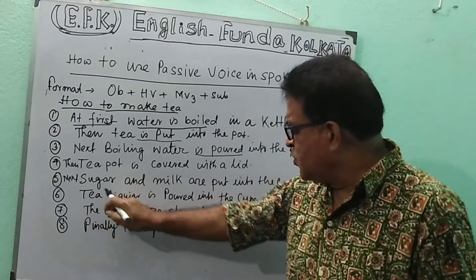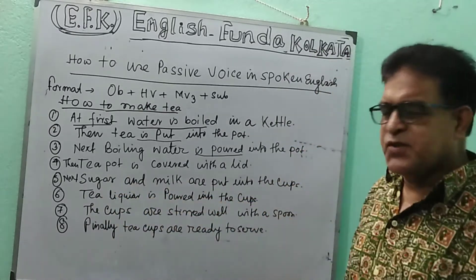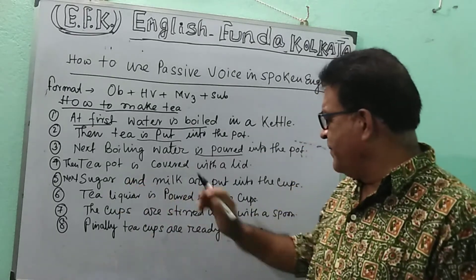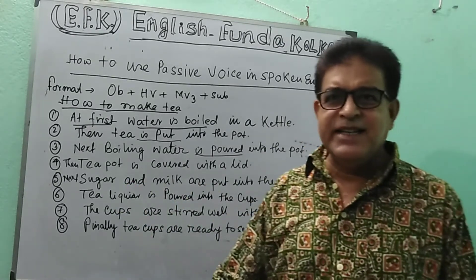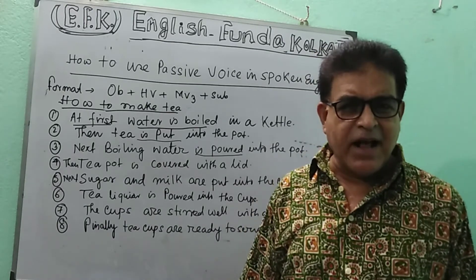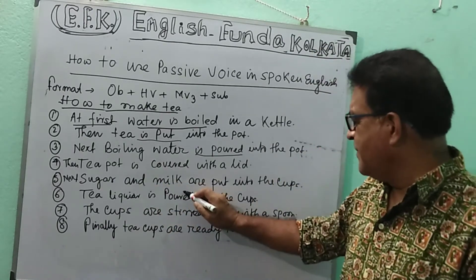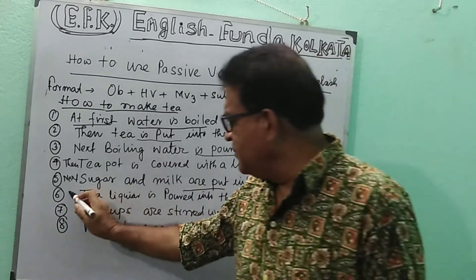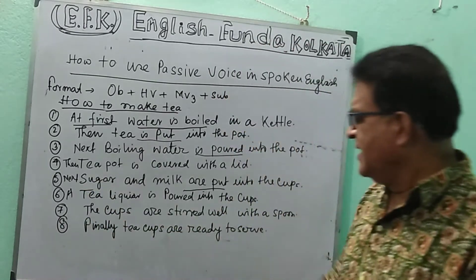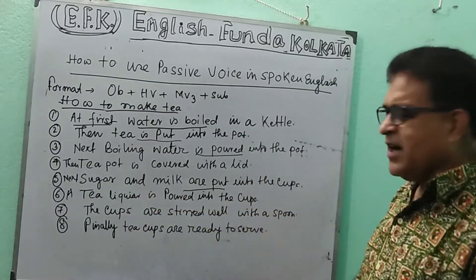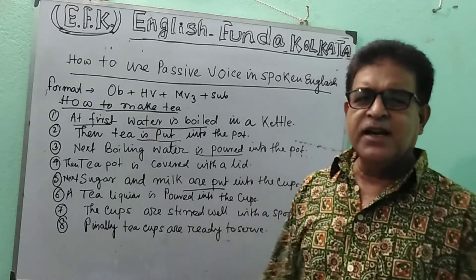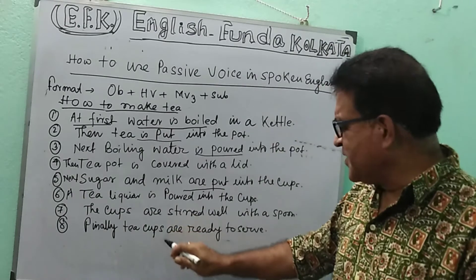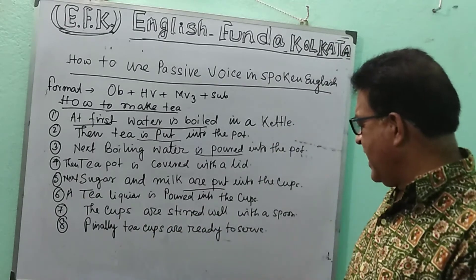Then sugar and milk are put into the pot. After that, the tea liquid is boiled. Next, the tea is stirred well with a spoon.